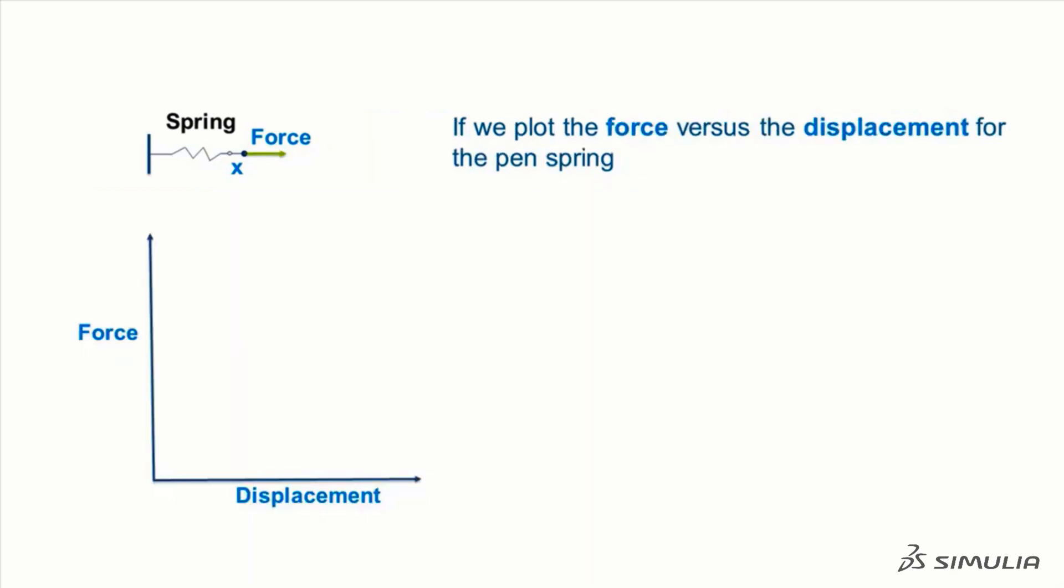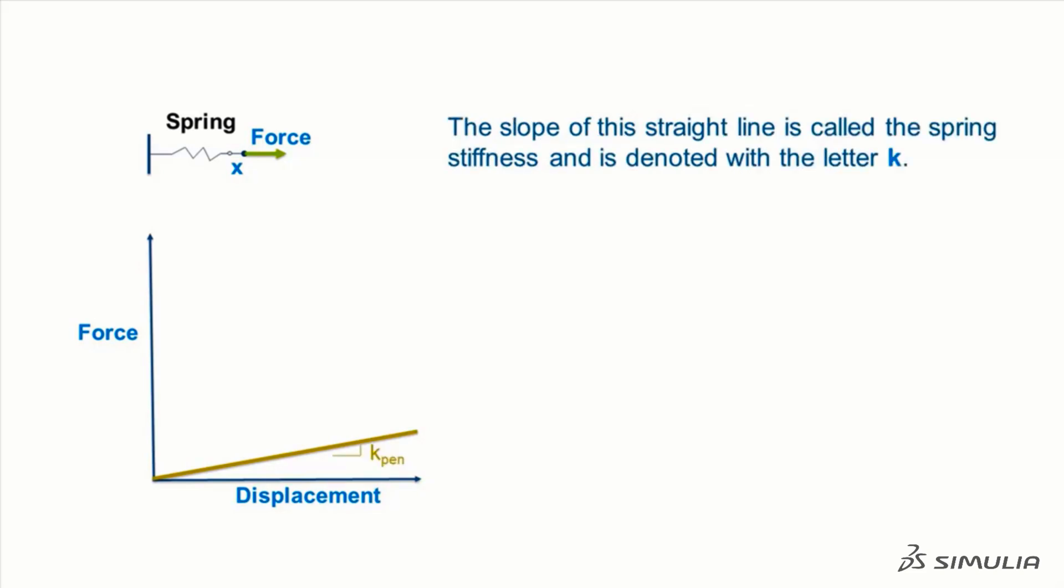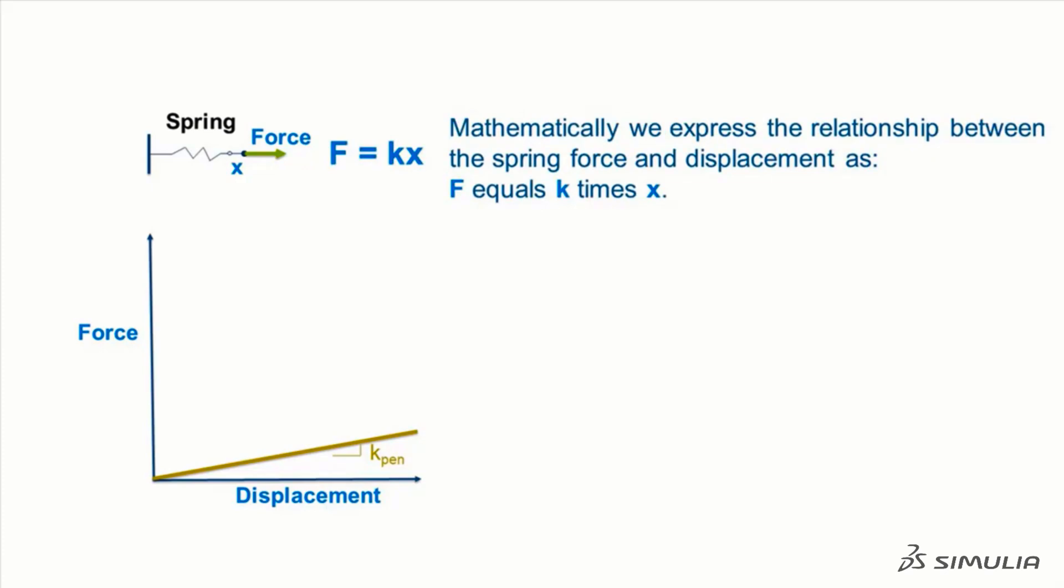If we plot the force versus the displacement for the pen spring, we get a straight line. The slope of this straight line is called the spring stiffness and is denoted with the letter k. Mathematically, we express the relationship between the spring force and the displacement as F equals k times x.